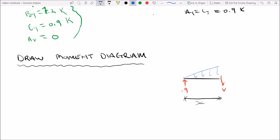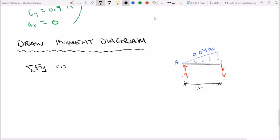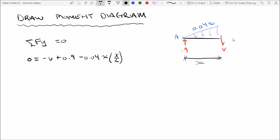So taking a section at this point, distance A, and this was 0.04x like we've determined before. The sum of the forces in the y-direction equal to zero, the area of our load is 0.04x times x over 2.